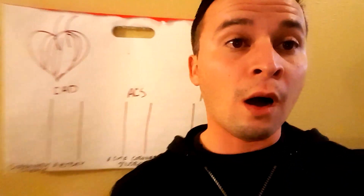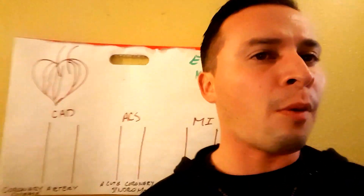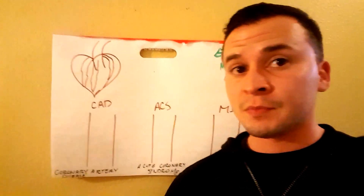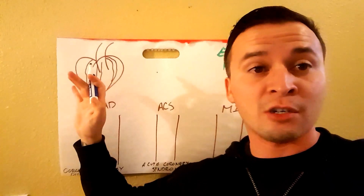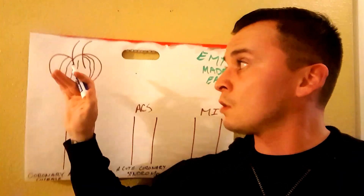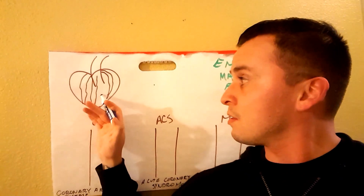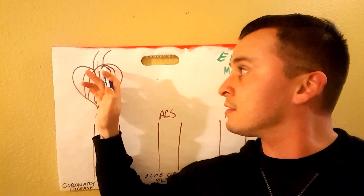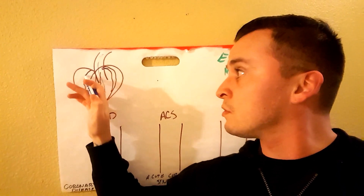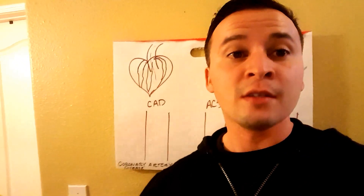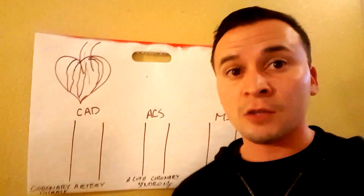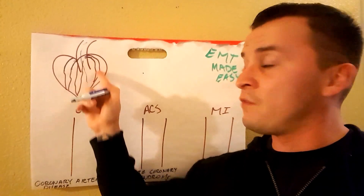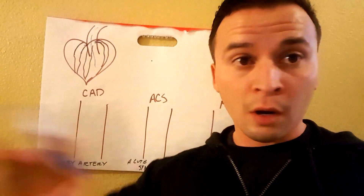I'm back with a quick video on the heart — kind of a part two for cardiac anatomy. I'm going to go over blockages and the coronary arteries. Just like your heart supplies blood to the rest of your body, it also supplies blood to itself. As soon as blood leaves the heart through the aorta, there are vessels that branch off right after it exits, and those vessels feed the heart oxygen to keep it alive and keep it pumping.